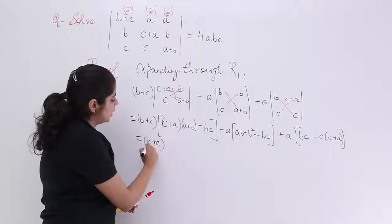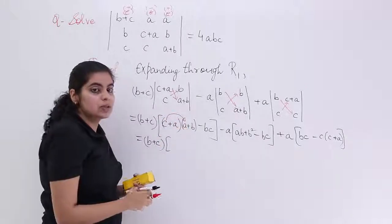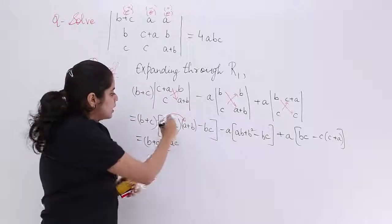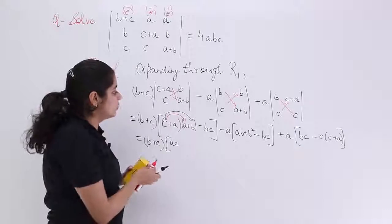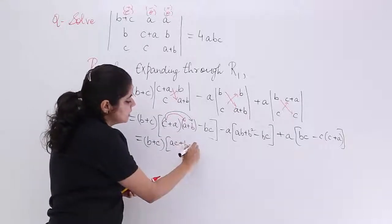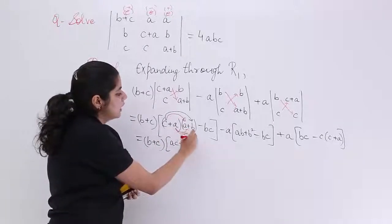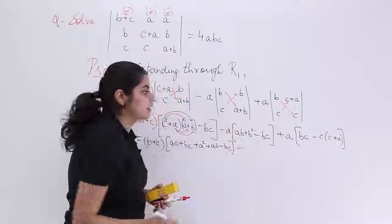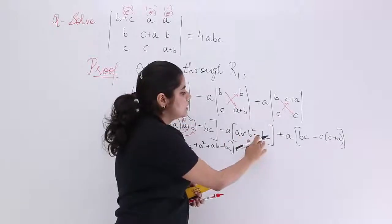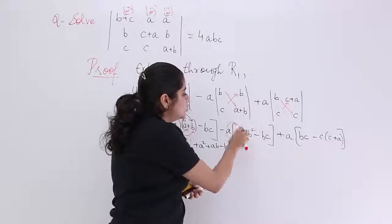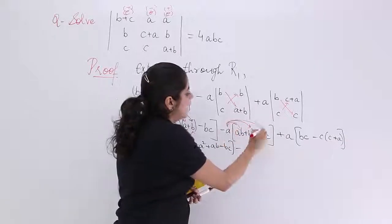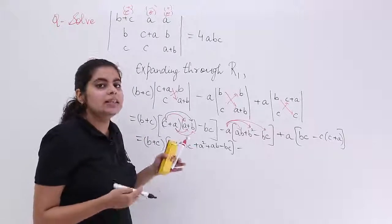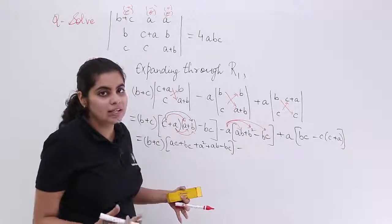Now expanding: (b+c) remains outside. Inside, we expand (c+a)(a+b) = ac + bc + a² + ab. The minus term inside becomes −bc. For the second bracket: b(a+b) − bc = ab + b² − bc. For the third bracket: bc − c(c+a) = bc − c² − ac. It is advisable to use alphabetical order when writing terms. This is a lengthy procedure, but in the next topic we will see properties and shortcuts to solve determinants more efficiently.